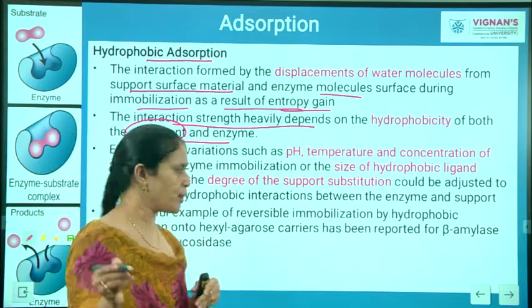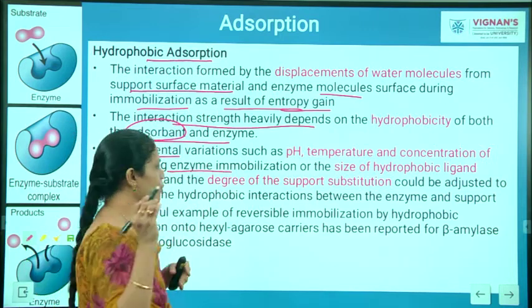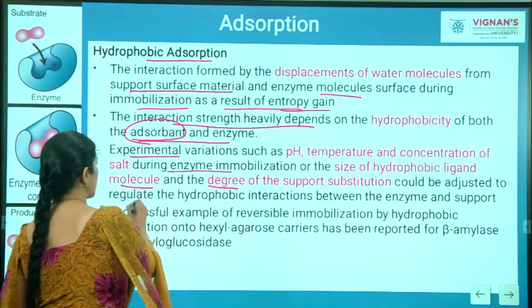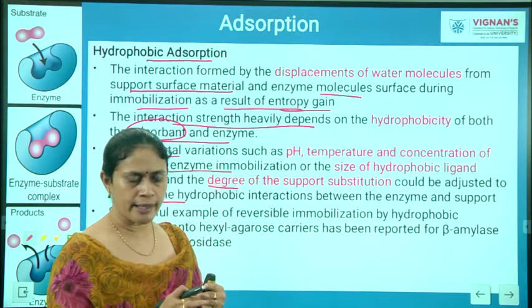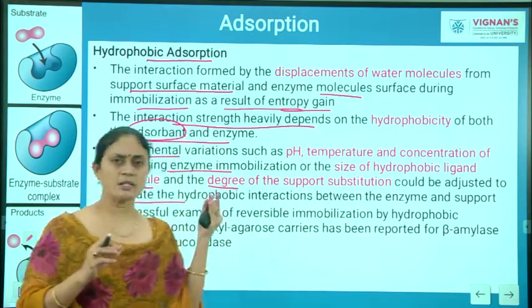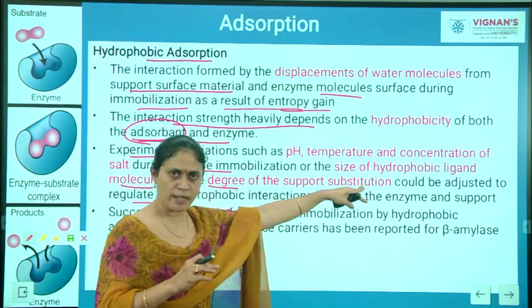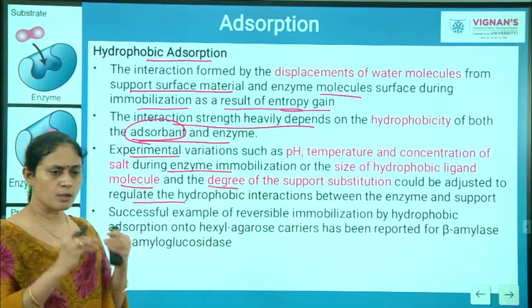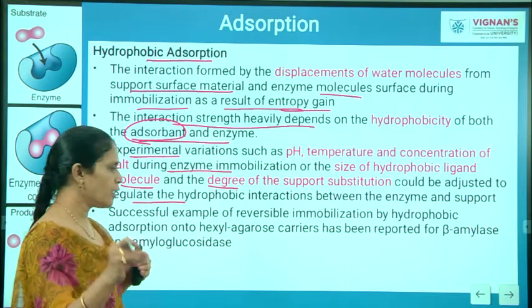Experimental parameters such as pH, temperature, concentration of salt, size of the hydrophobic ligand, and degree of support substitution can be adjusted to regulate hydrophobic interactions between enzyme and carrier. By varying these parameters, you can achieve good hydrophobic bonding between your enzyme and matrix.